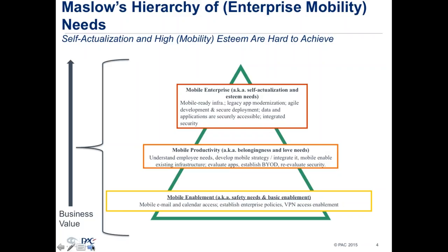Instead of using Maslow's five categories, there are three general categories for enterprises and enterprise mobility: basic mobile enablement at the bottom of the pyramid, then mobile productivity, and then the actual mobile enterprise. The greater the awareness and the higher the level of investment in mobility, the likelier a truly mobile enterprise state is reached — a high form of self-actualization. Starting from the bottom, pure mobile enablement reflects the basic mobility needs enterprises must satisfy, because mobility is an everyday part of business — even if it's basic email or calendar access.